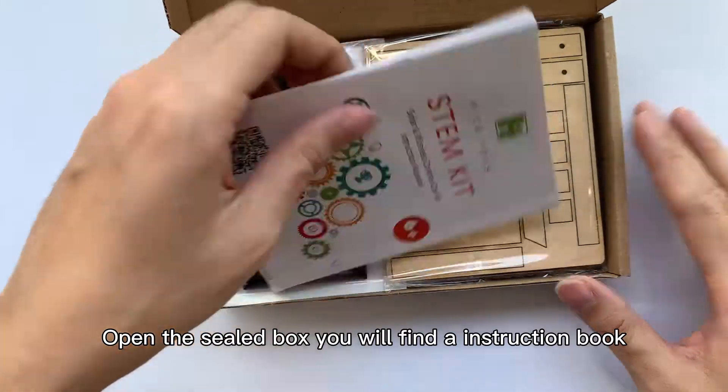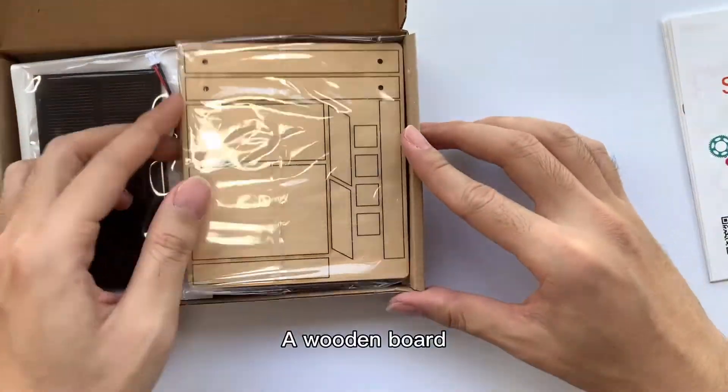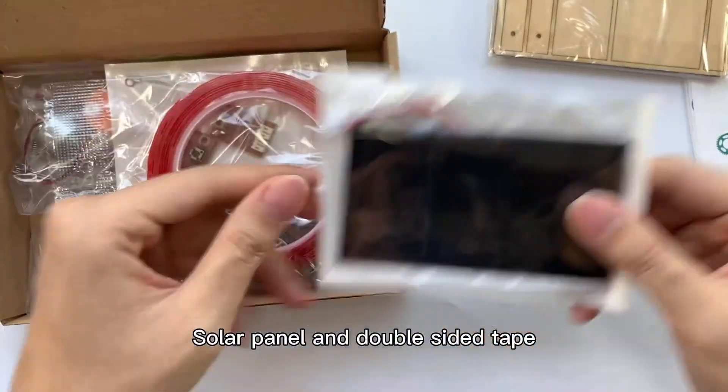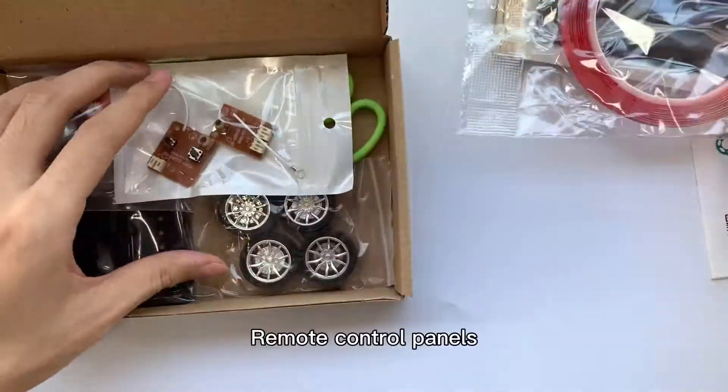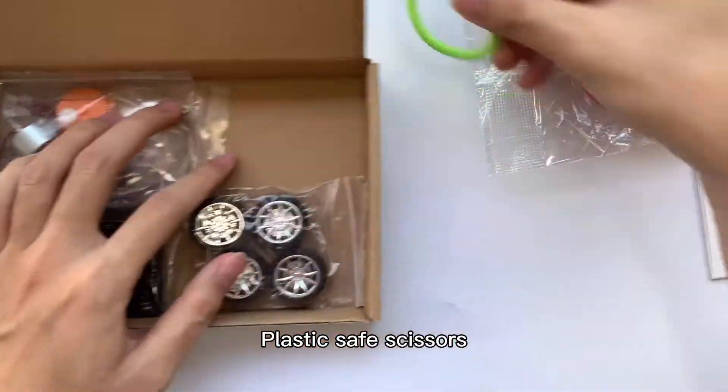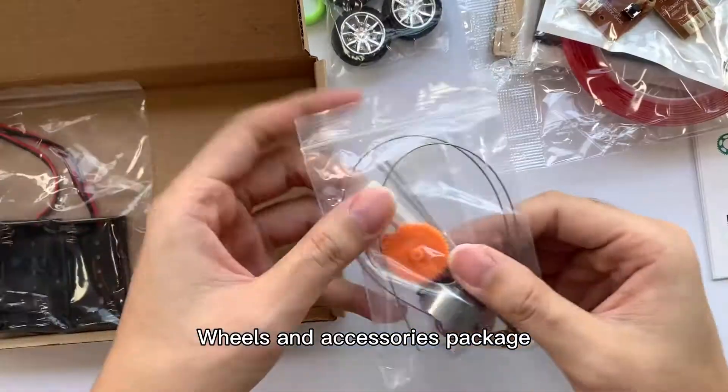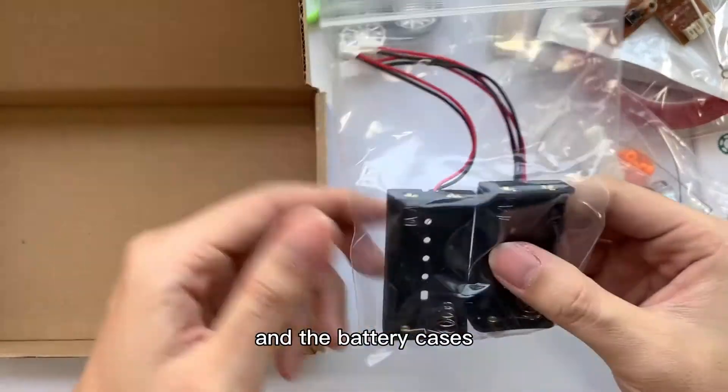Open the seal box. You will find an instruction book, a wooden board, solar panel, double-sided tape, remote control panels, plastic-safe scissors, wheels, accessories package, and the battery cases.